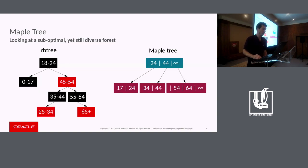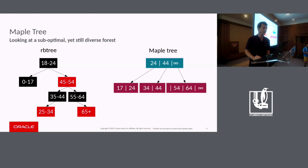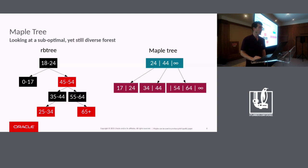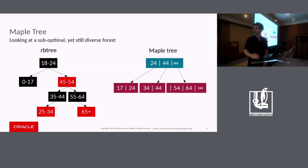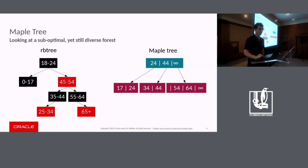If you look at a suboptimal scenario — these are worst-case scenarios — it's the same ranges but the trees aren't balanced. As you can see, the rbtree can get up to a higher number of dereferences, whereas the maple tree still maintains two dereferences to get to what you're looking for.